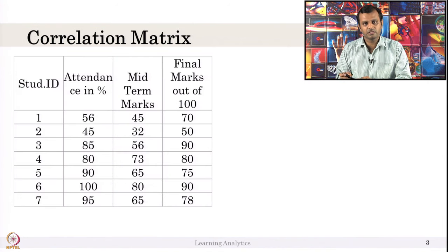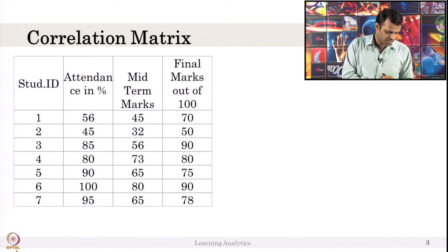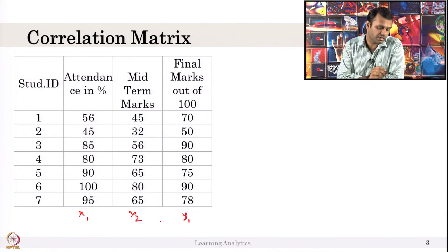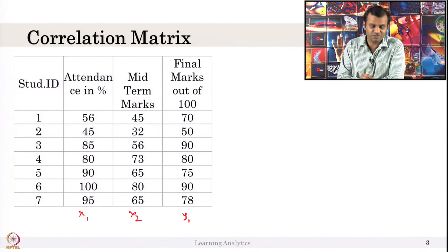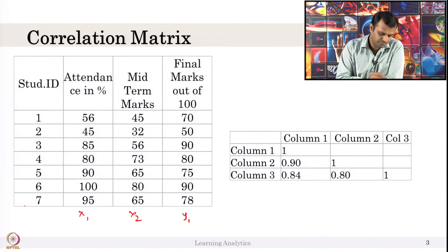Let us look at another example. We have attendance, midterm marks, and final marks in the semester. We have two independent variables and one dependent variable — x1 (attendance), x2 (midterm marks), and y (final marks). We can compute the correlation between these values: what is the correlation between attendance and final marks, and what is the correlation between midterm marks and final marks? Let us look at that.